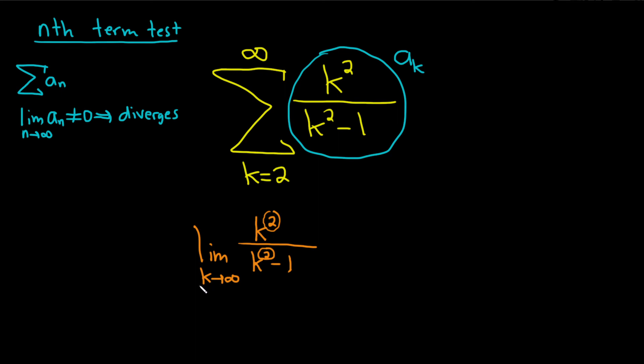Whenever that occurs, and you're taking a limit to infinity, the answer is the ratio of the leading coefficient. So here, the leading coefficient is 1, here the leading coefficient is 1. So the answer is just 1 over 1, which is equal to 1.